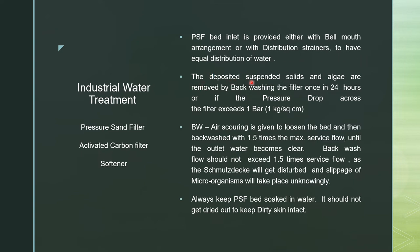Deposited suspended solids and algae are removed by backwashing the filter once in 24 hours, or if the pressure drop across the filter exceeds 1 bar or 1 kg/cm². Every morning the filter is backwashed: first the vent is opened, air scouring is given to loosen the bed, then backwash is done at 1.25 to 1.5 times the maximum service flow until the outlet water becomes clear.